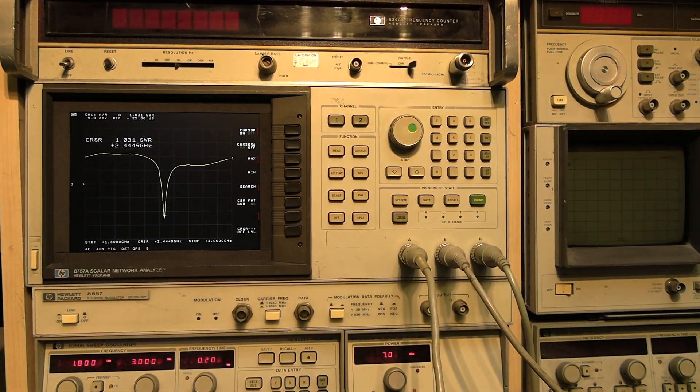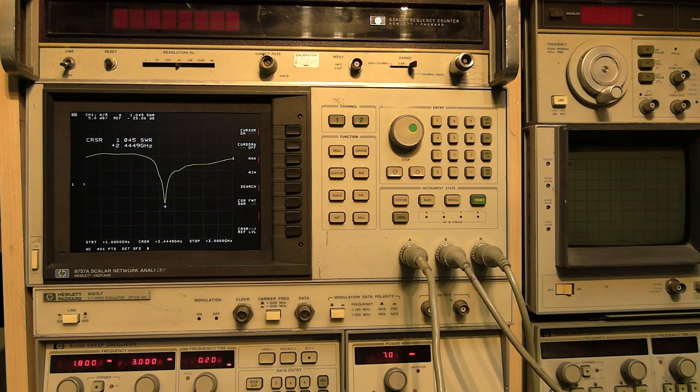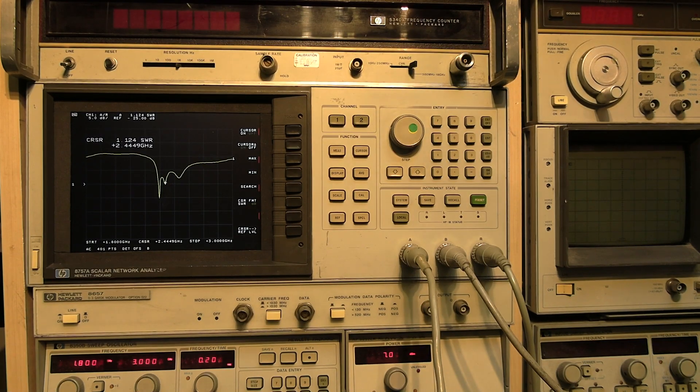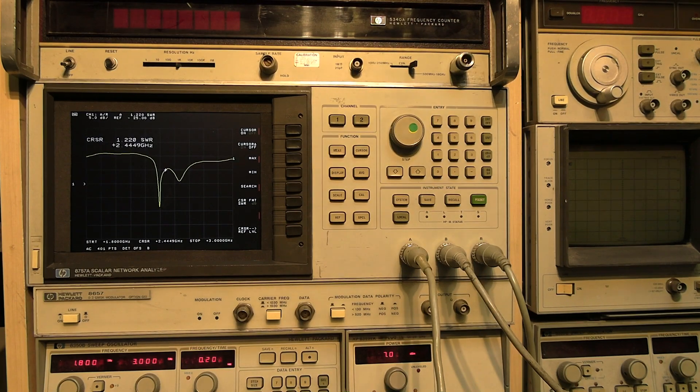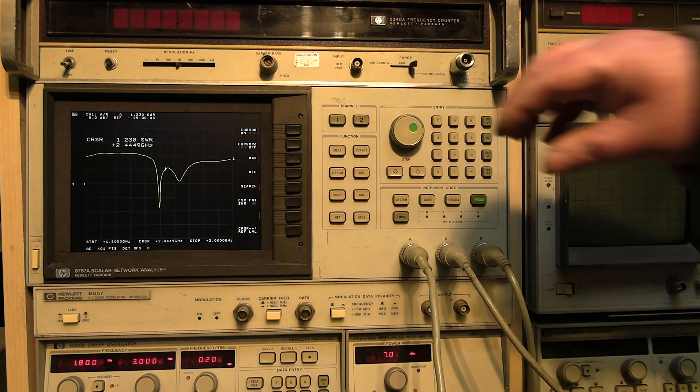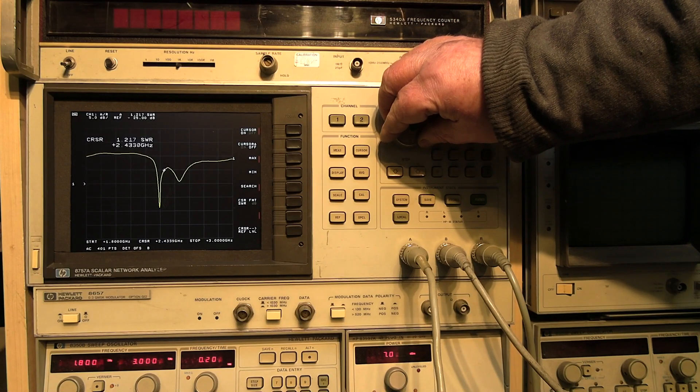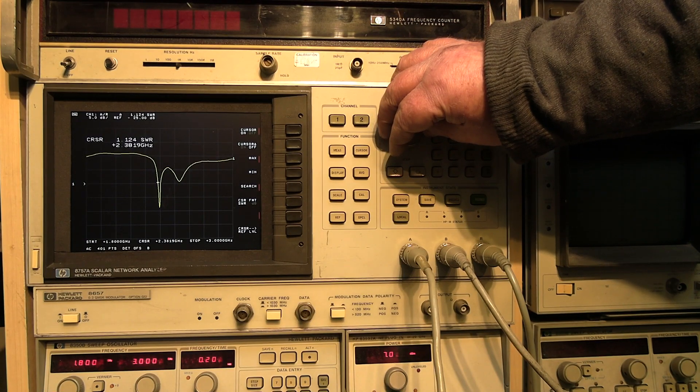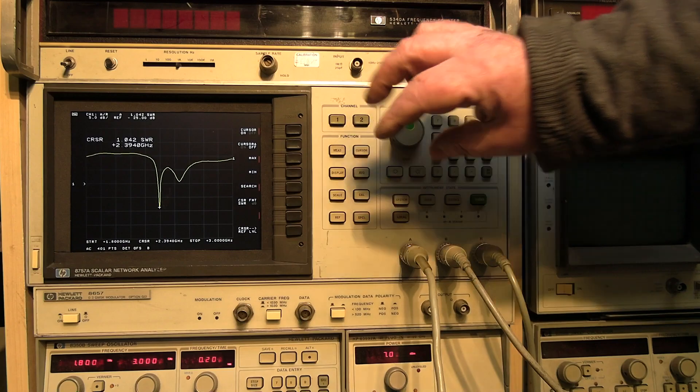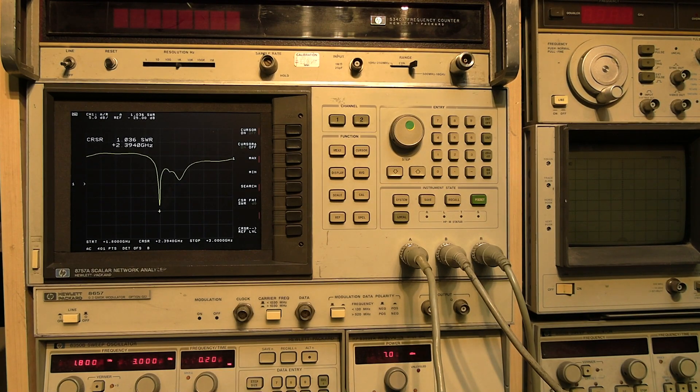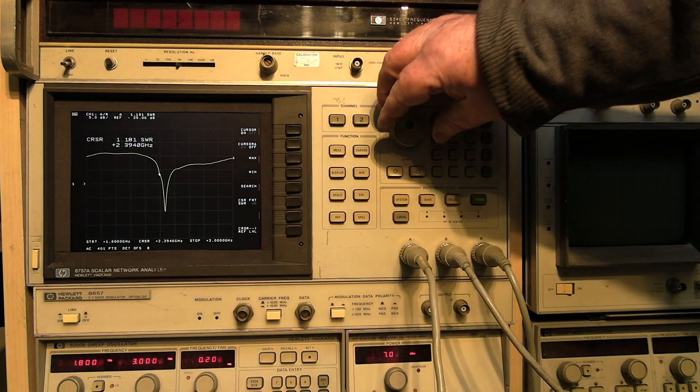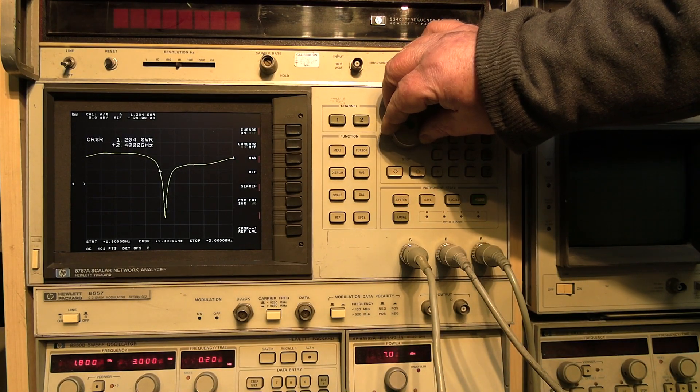And we've got it nice and centered on 2.44 GHz there. So I'll put the tubing on. Now look what happens. The frequency shifts again. It's just small, but it's enough to make the performance of this antenna be a little bit less. Now there, we've got it on 2.39 GHz. It's going to perform poor for the Wi-Fi spectrum. If I move it away, it jumps back to its original position.